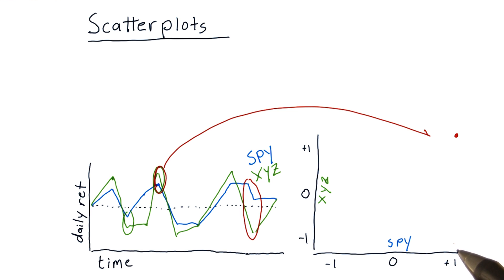So again, we had SPY in positive territory, but XYZ was in negative territory. So that would represent a dot about like that.